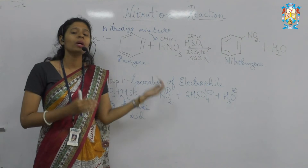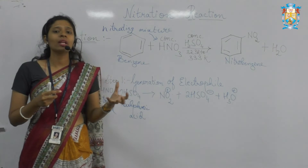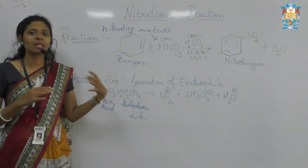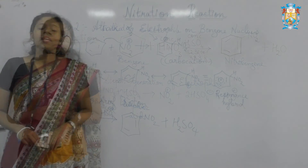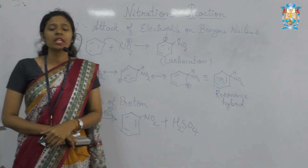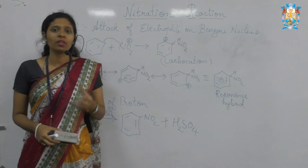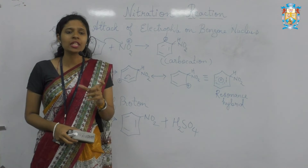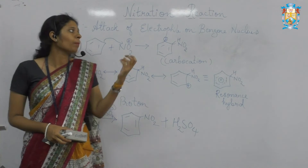In the next step, we will see how this NO2 group — which is the electrophile, also called an electro-deficient species — gets attacked to the benzene ring and how we proceed to the product. Step one is a simple step where from the nitrating mixture we get the generation of the electrophile. In step two, what happens is the attack of the electrophile on the benzene nucleus. The NO2+ has a plus sign indicating electron deficiency, making it an electrophile.